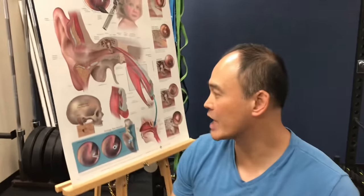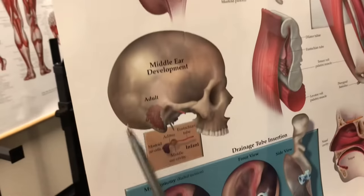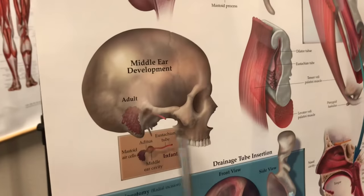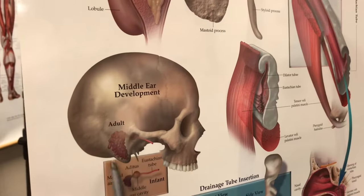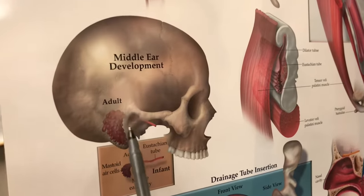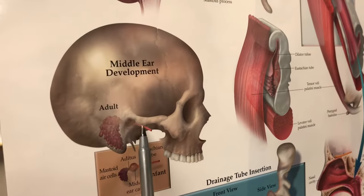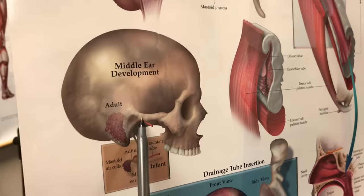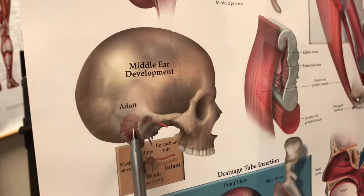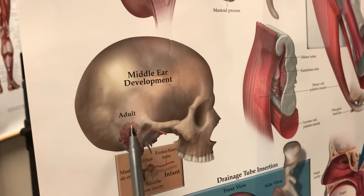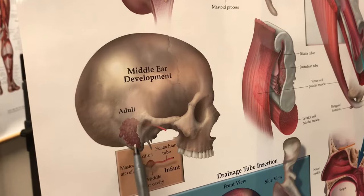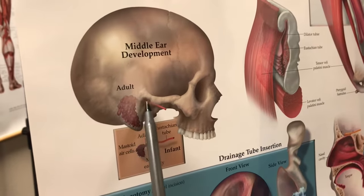If you look at the anatomy over here — this is the adult skull — you can see the mastoid process and the ear right here. This red tube is the eustachian tube of the adult, and you can see how it kind of points downward. So bacteria and stuff that can build up in the mastoid air cells and within the inner ear can escape out the eustachian tube because it's pointed downward.